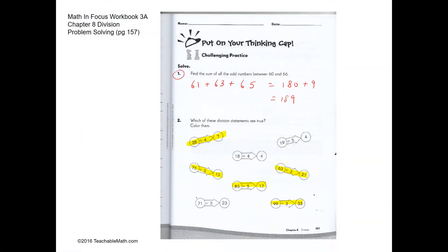Challenging practice question 1: find the sum of all the odd numbers between 60 and 66. We have all the odd numbers, and what we are going to do is decompose the numbers into tens and ones. So we have 63, which is 60 and 3, and 65, which is 60 and 5. We add the tens and then add the ones, so the answer is 189.